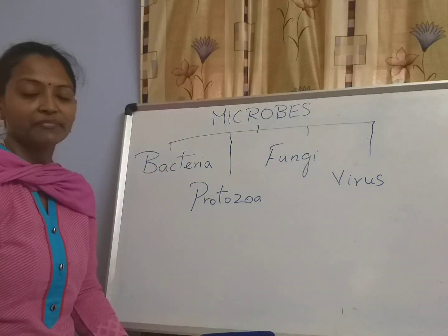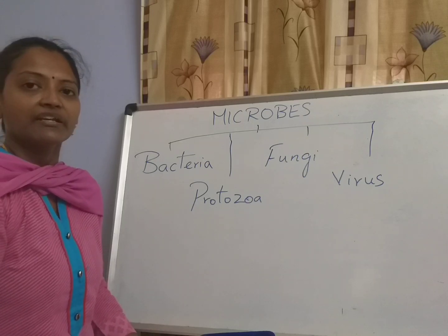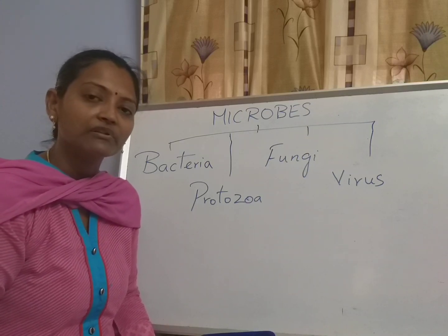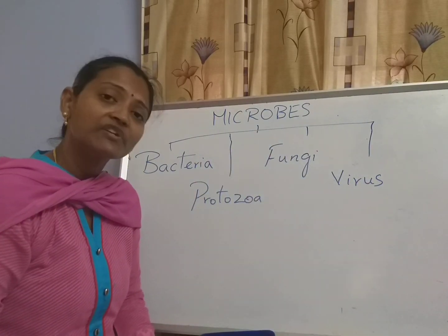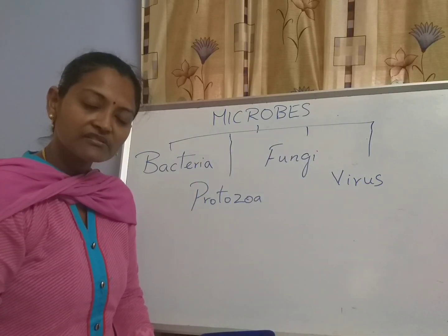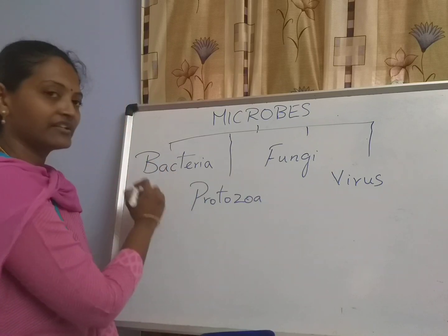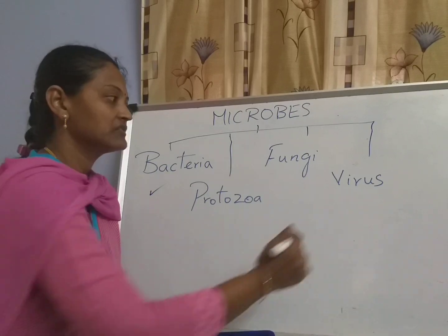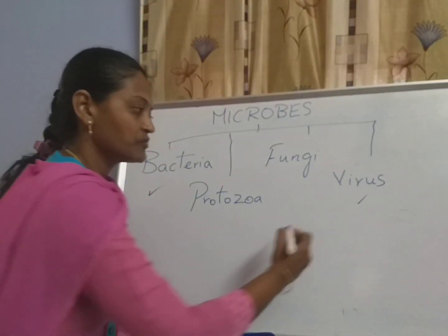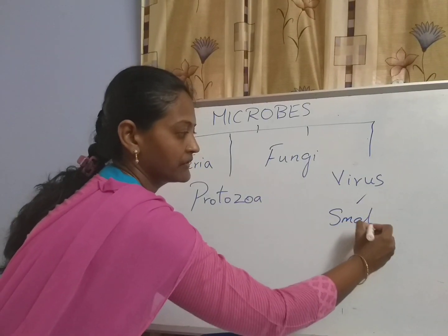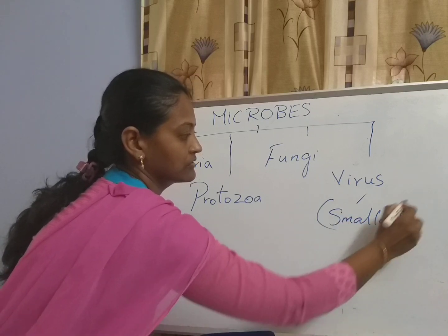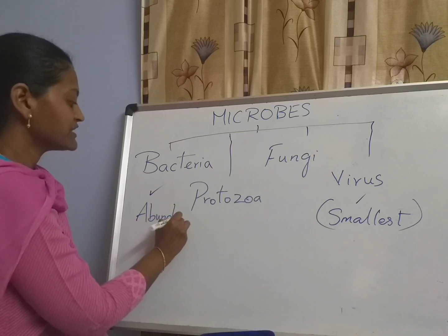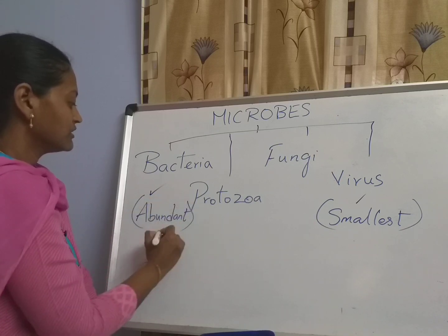Coming to the first one — bacteria. Bacteria is everywhere; it is the most abundant microbe, meaning it is more in number than all other microbes. Among all these microbes, which one is the smallest? Virus is the smallest one. Bacteria is the most abundant.